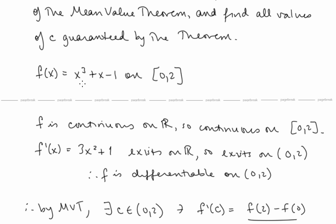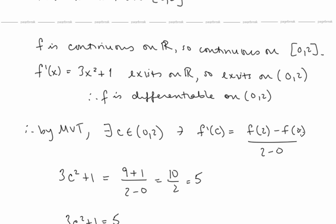We can take the derivative, 3x² + 1, and this exists for all real numbers, so certainly it exists on the open interval (0, 2). So f is differentiable on (0, 2). We've shown that this function satisfies the conditions of the Mean Value Theorem on the interval [0, 2], and therefore by the theorem, there exists a point c in this interval such that f'(c) equals [f(2) minus f(0)] over [2 minus 0]. We're asked to find such values of c, so let's compute this quotient.